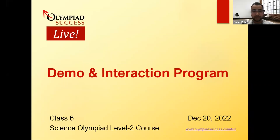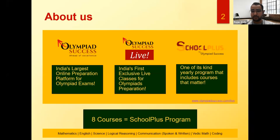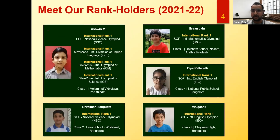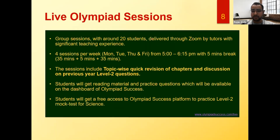Welcome students to the demo interaction program for Class 6 Science. This course is for Level 2. Olympiad Success is India's largest online preparation platform for Olympiad exams. We have Olympiad live classes and a School Plus program offering eight courses: Mathematics, English, Science, Logical Reasoning, Communications, Vedic Maths, online CBSE plus Olympiad classes for Grades 6 to 10, and one-on-one classes for international Mathematics Olympiads like USAMO, CMO, CIMO, TIMO, Math Count, BS Math Competition, Math Kangaroo, and PRMO.